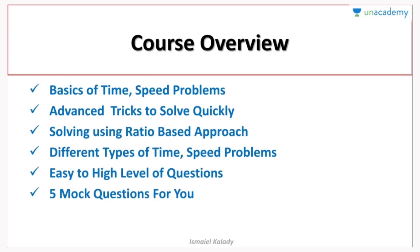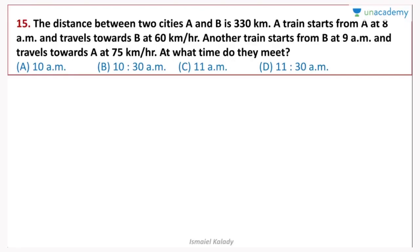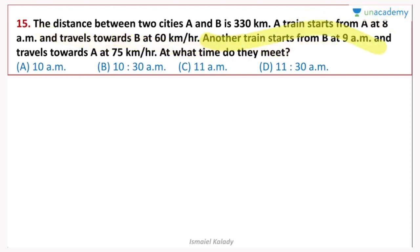First question: The distance between two cities A and B is 330 km. A train starts from A at 8 am and travels towards B at 60 km per hour. Another train starts from B at 9 am and travels towards A at 75 km per hour. At what time do they meet?